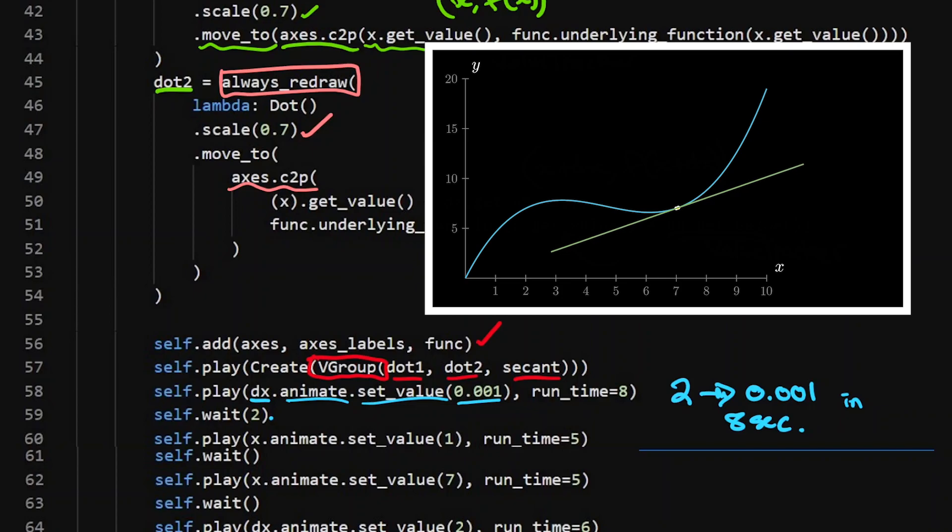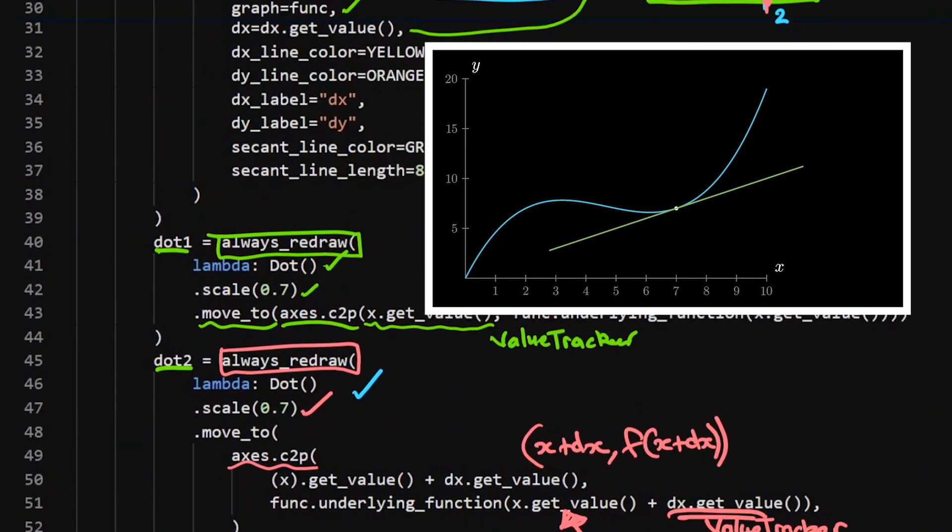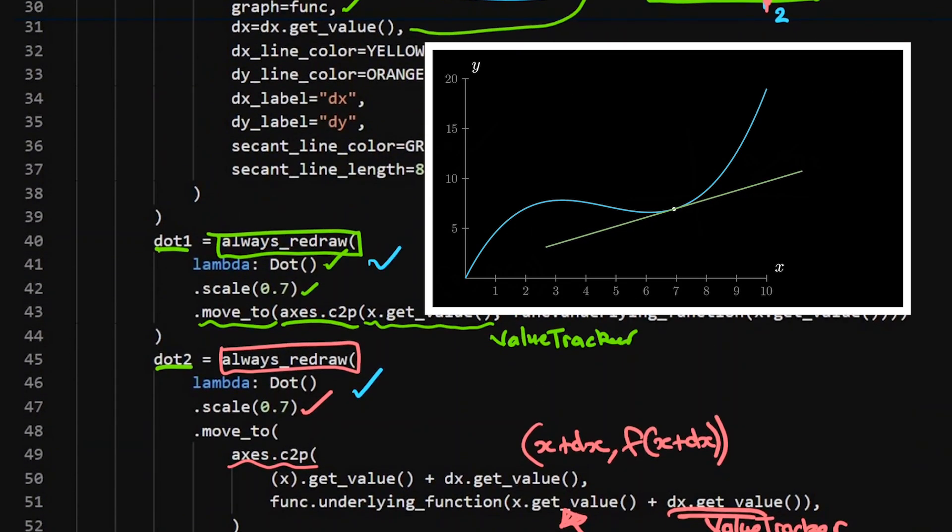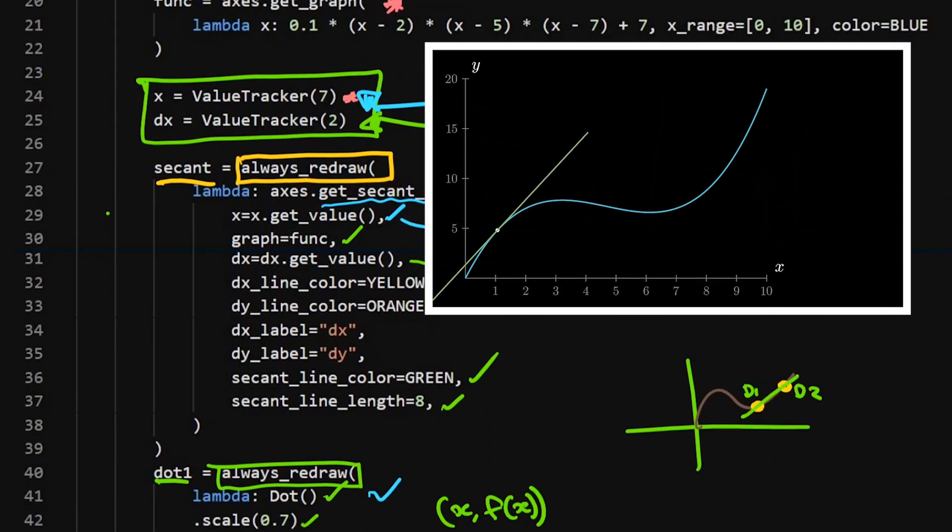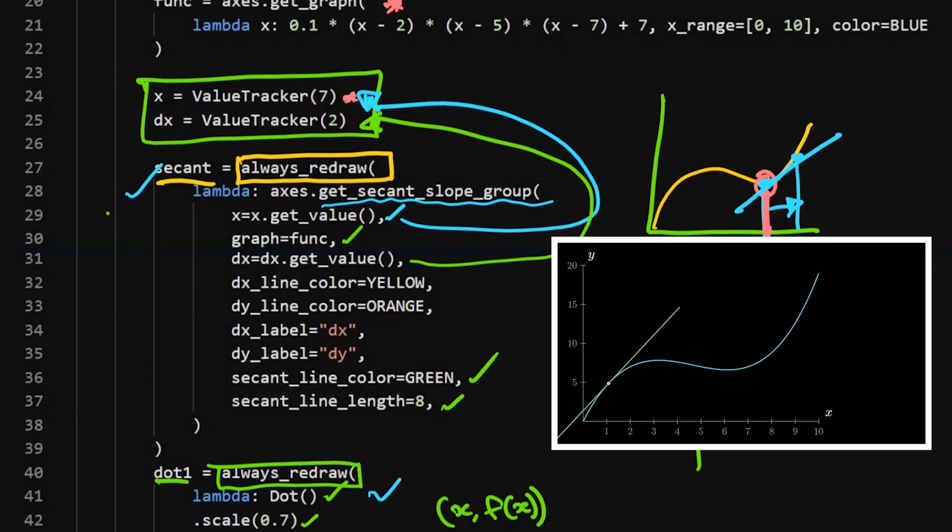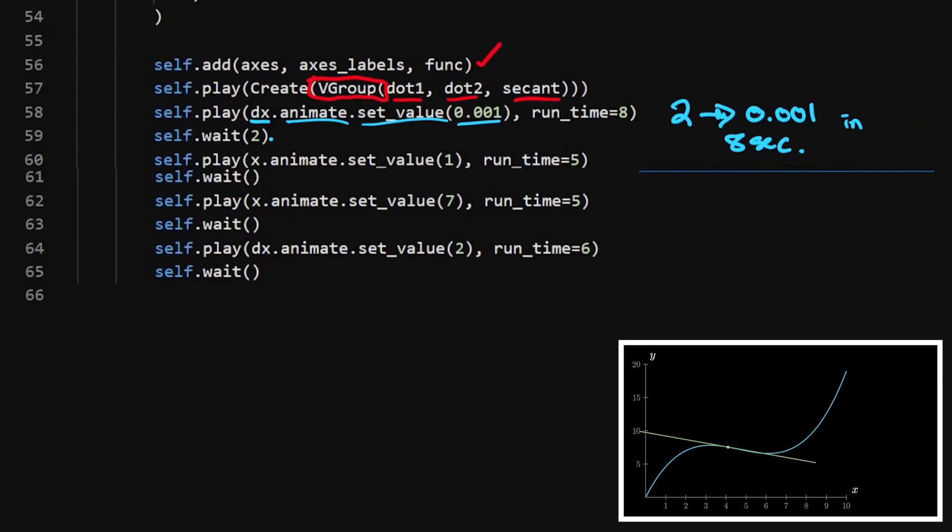So if this is always redrawed, that'll be changing. And my secant line here, and my secant, which is really nice. Then I can wait. Then I can change the x value.